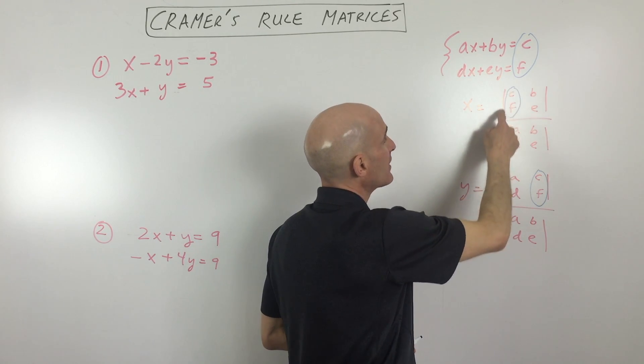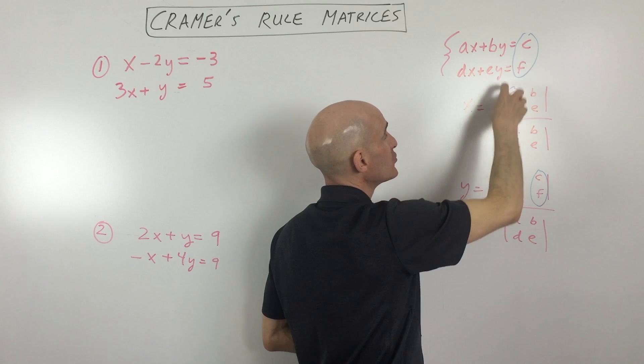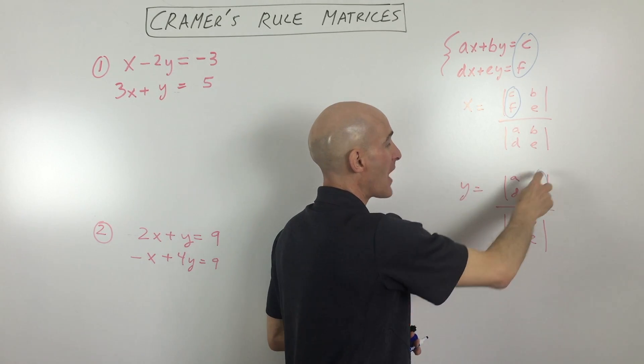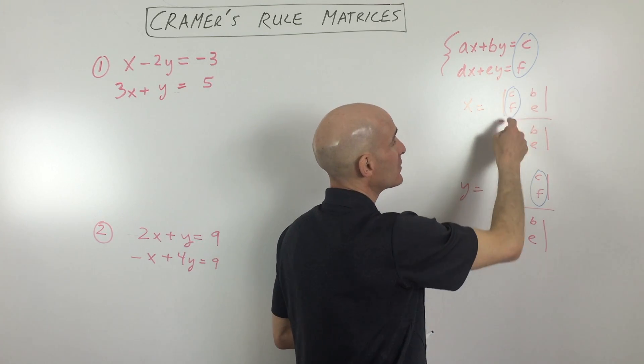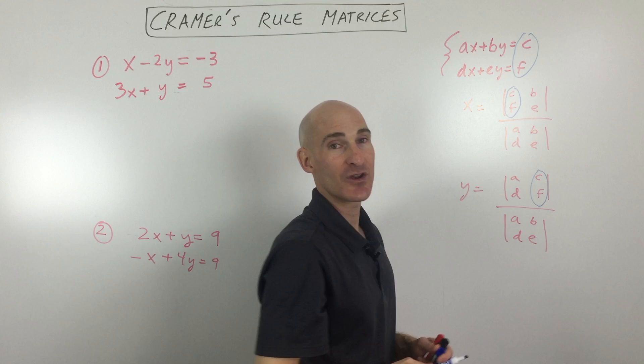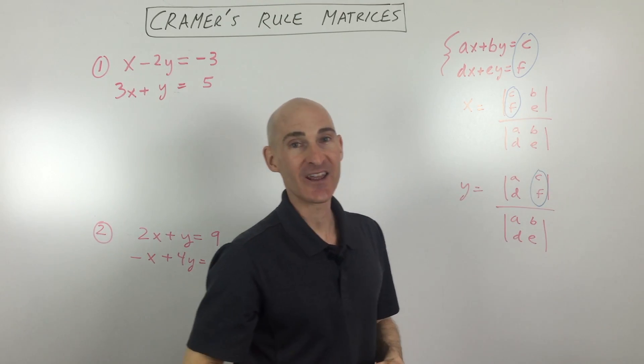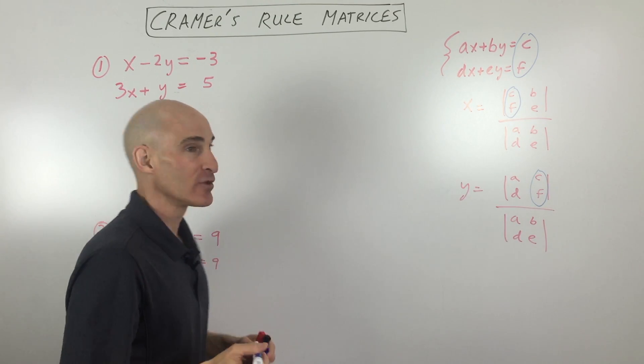But when you solve for x, replace those coefficients here with the solutions. When you're solving for y, replace the y coefficients here with the solutions. Then all you have to do is take the determinant of the numerator, take the determinant of the denominator, divide, and you've got it. So I'll show you what I mean in these next couple of examples.